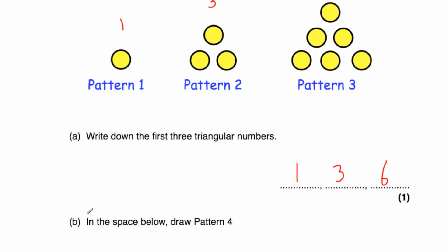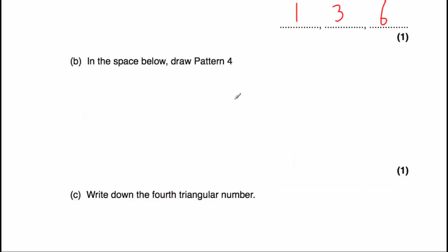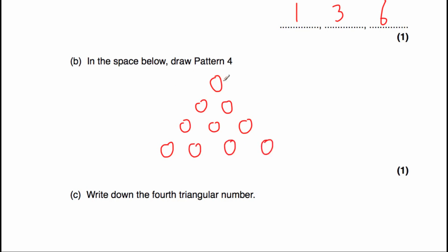Question 1B says in the space below, draw pattern four. As you can see, we've got one dot in pattern one, three dots in pattern two, and six dots in pattern three. Each time we're adding a new row at the bottom — one, then a row of two, then a row of three. So we'll have a triangle with a row of four dots at the bottom: one circle, then two, then three, then four circles. That gives us pattern four with ten circles. The fourth triangular number is ten.